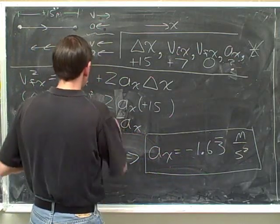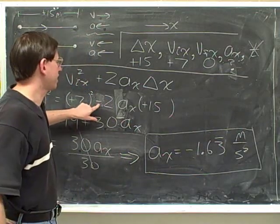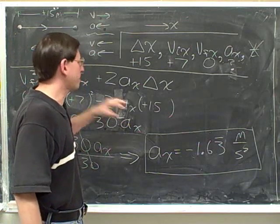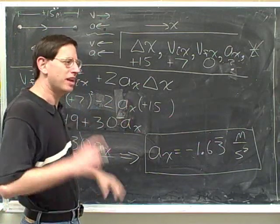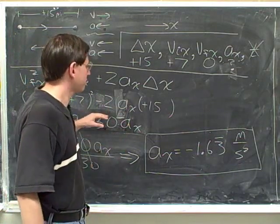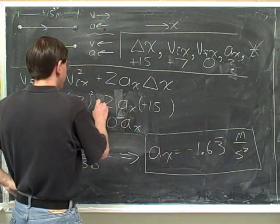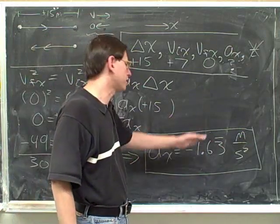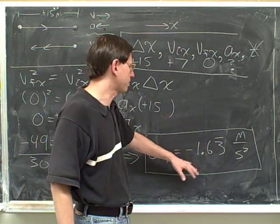What would happen if you put this negative sign in here, and then solved the problem? Well, then the variable a would come out to be positive. In a way, that makes sense, because you already put the negative sign in. But I think it's a little bit better to let the variable itself include its own sign. That way, you can check whether the variable comes out to be something that makes sense. I hope that made sense to you.